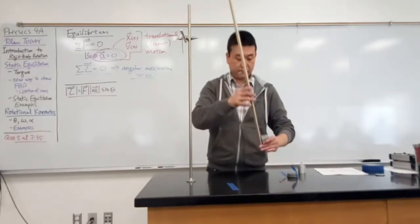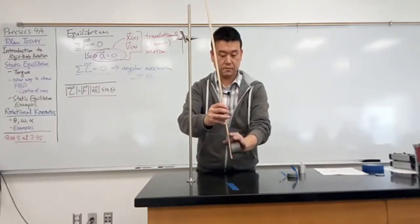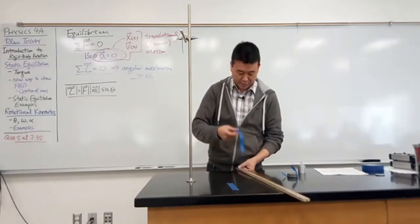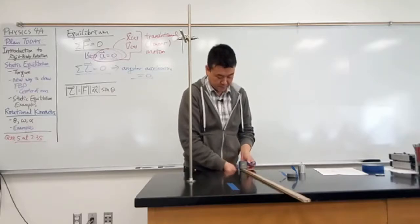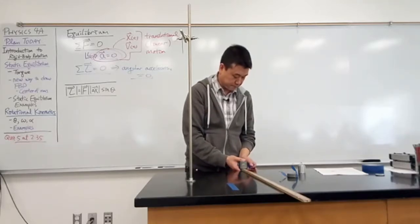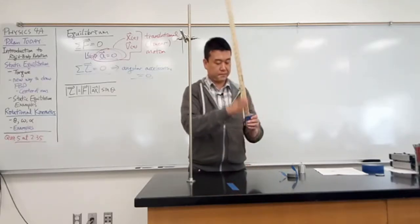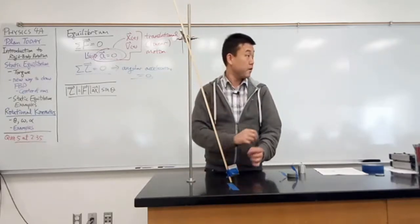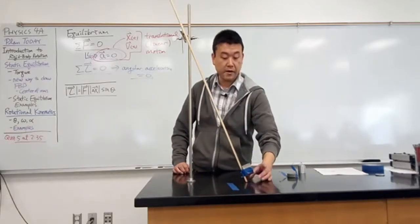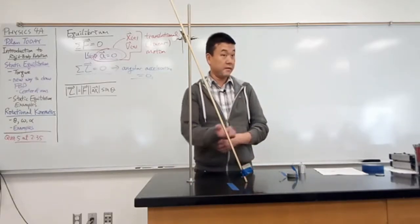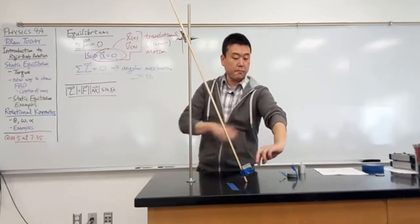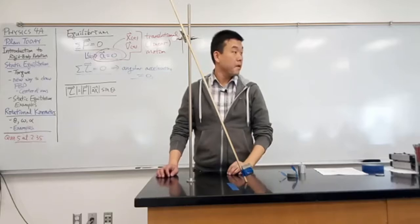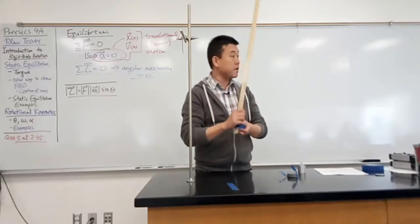When you're at the very bottom, the ladder was actually pretty secure. In fact, it was so secure that you could pull it out here and it still wouldn't have slid. But somehow, in the process of you walking up, the ladder became less secure, so that it slides out. That's the situation that we want to analyze.